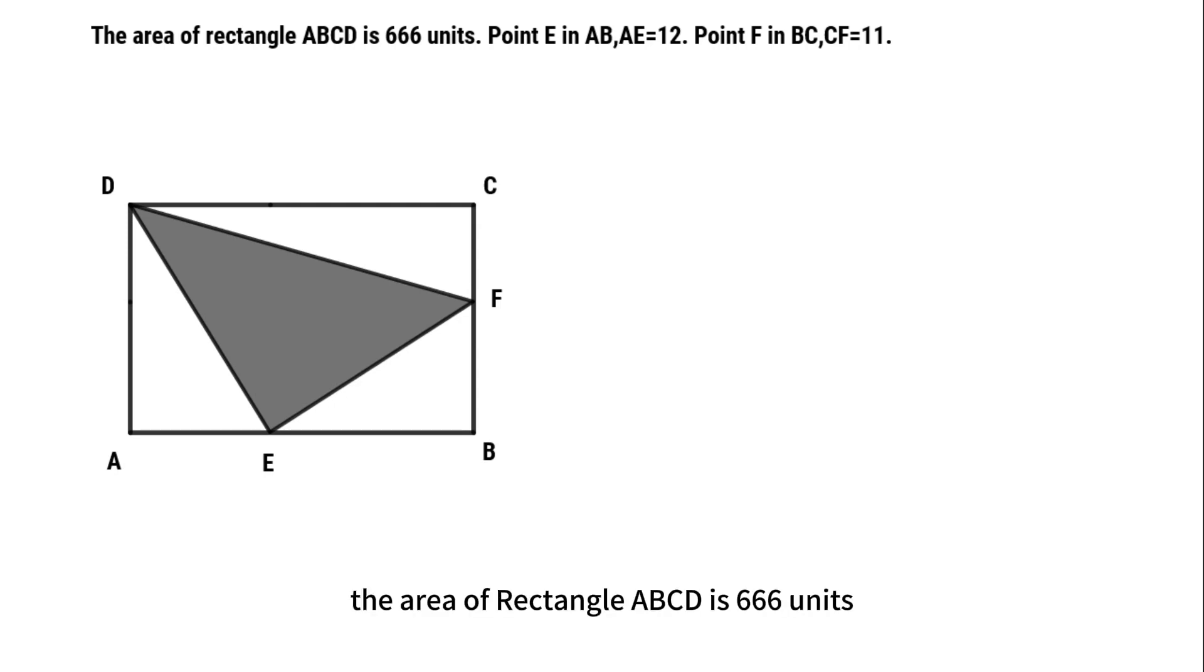The area of rectangle ABCD is 666 units. Point E in AB, AE equals 12. Point F in BC, CF equals 11. Problem is, what is the area of triangle DEF?